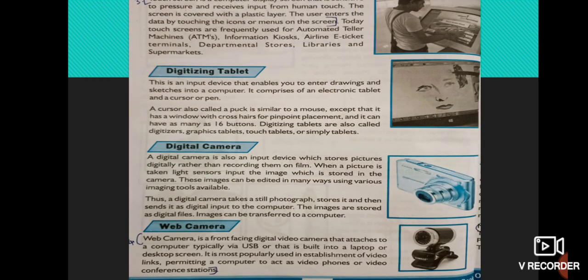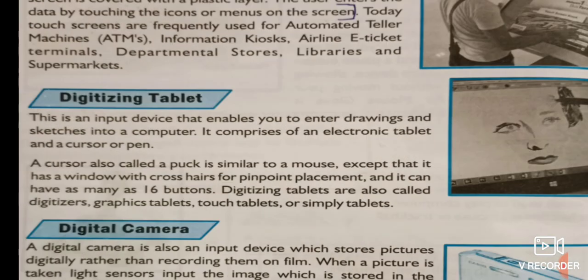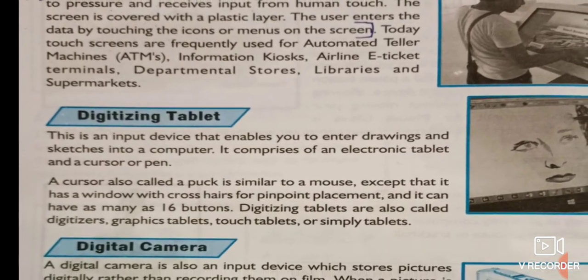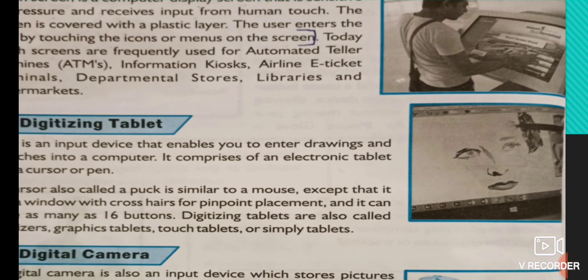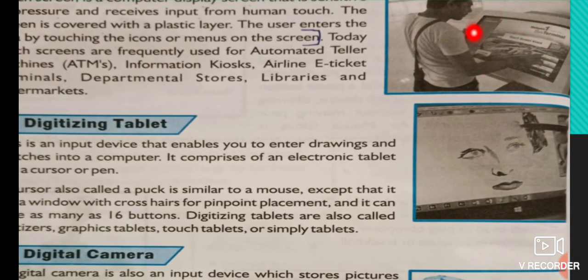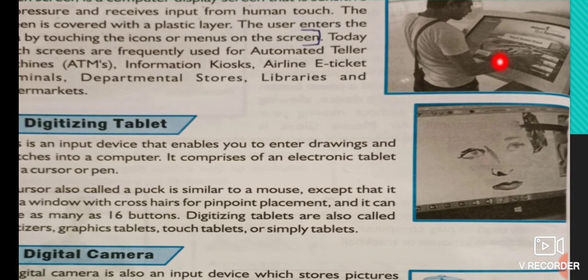Today we are going to see a few more input devices that are available. The first one is touch screen. You can see the picture — a person is operating some input through a touch screen. For example, if a person is using an ATM machine, the person has to select some information by pressing or touching the screen, and through that the computer is going to receive the input.